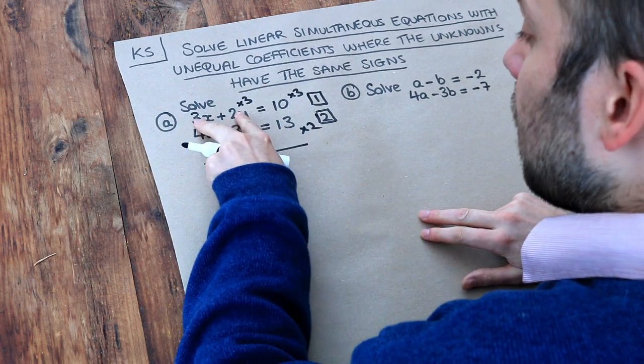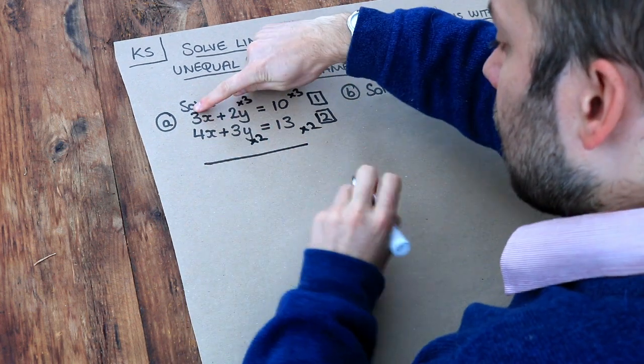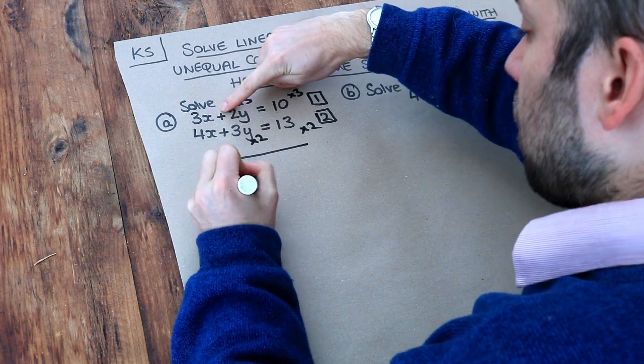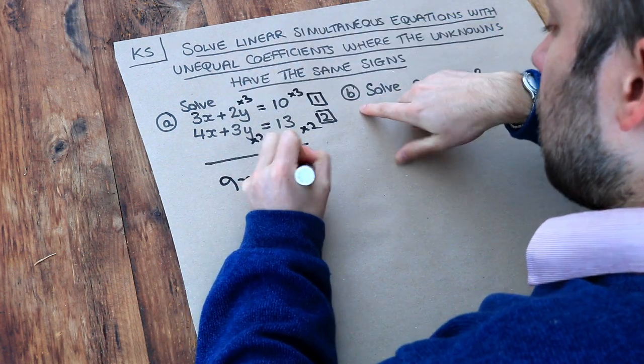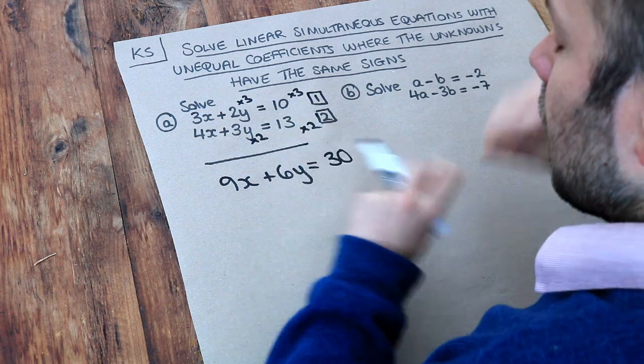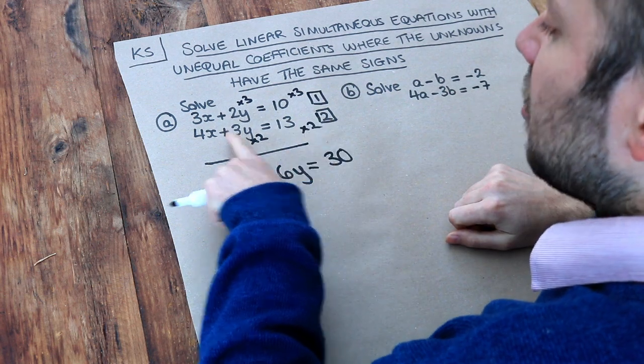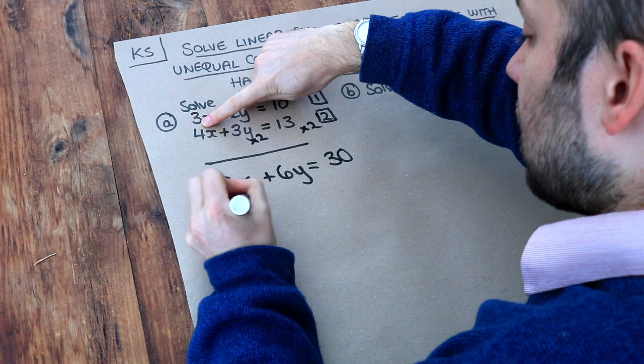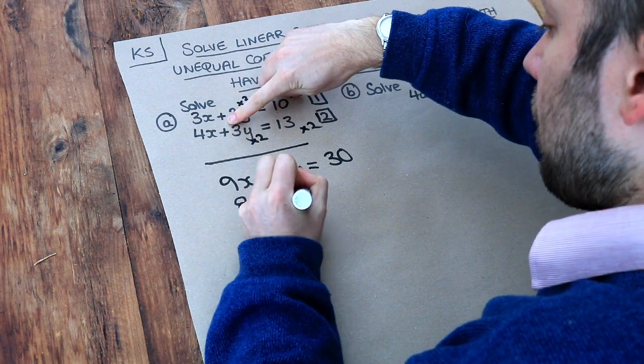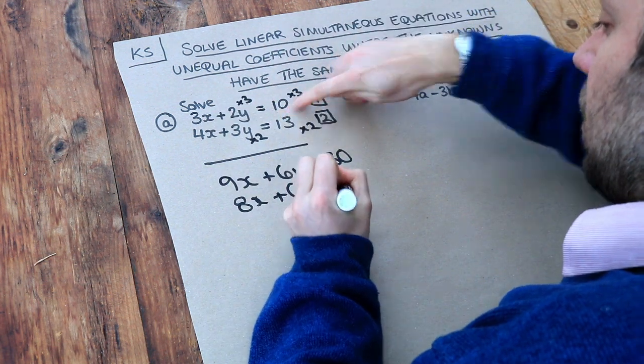So let's scale these equations. This side, we're timesing by 3, that's going to give us 9x plus 6y, and we times the right-hand side by 3, we get 30. And then the second equation, we're timesing both sides by 2 this time, that's going to be 8x plus 6y. Times the right-hand side by 2, that gives you 26.